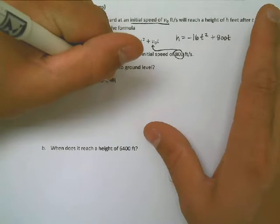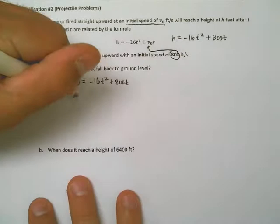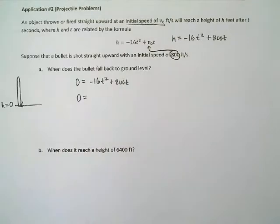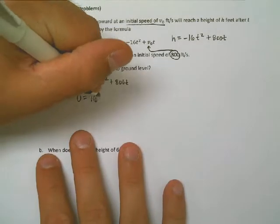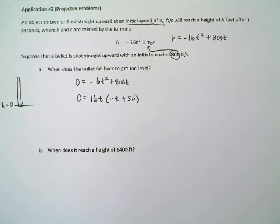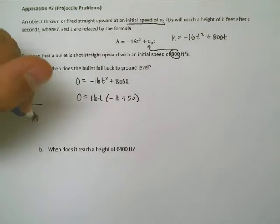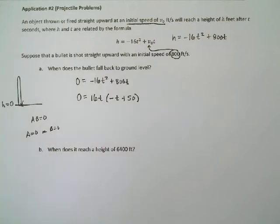Ways to solve this. I think the easiest way would be to factor. So I can say zero is equal to, 16 and 800. Are those divisible by the same thing? In fact, 16 times 50 is 800. That's pretty convenient. So I'm going to factor out a 16t. And if I do that, I'm left with negative t plus 50. So if I want to have a zero, going back to that zero property rule, remember, a times b is zero, either a is zero or b is zero. That means the only way I can get a zero here is if t equals zero or negative t plus 50 equals zero.